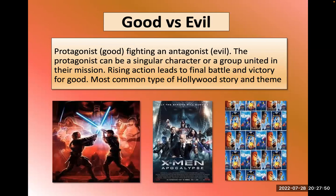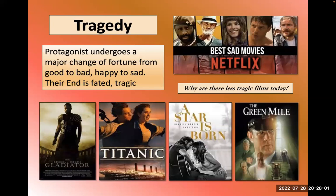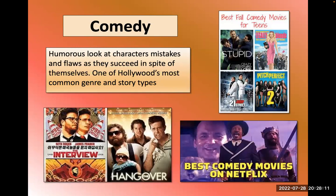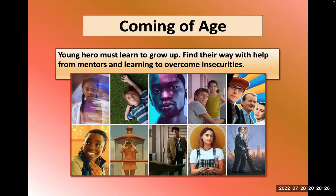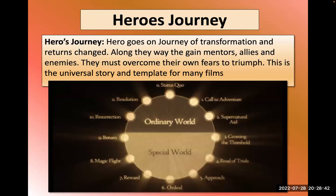Good versus evil is pretty self-explanatory — most superhero or science fiction and action films have some element of that. Tragedies are where the hero is doomed to fail. Comedies offer a humorous look at the characters' mistakes, where characters are often deeply flawed. Rags to riches goes from poor to rich. Coming-of-age films feature a young hero who finds their way, meets mentors, and learns to overcome insecurities. Many Academy Award-winning films are coming-of-age stories.